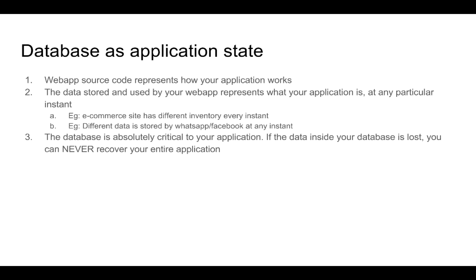The database is essentially the state of the entire application. The web app source code represents how the application works, but the database represents what the application is at any particular instance. For example, an e-commerce site has a different amount of stock at any given instance, so the state of the e-commerce site is represented only by its database. If we lose the information inside the database, our entire application cannot be recovered. We might be able to recover or rewrite our source code, but if the data dynamically created by the activities of our web app or our users is lost, the entire state of the application as it was is also lost.